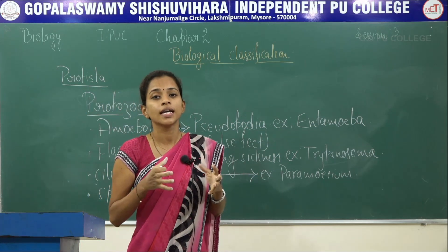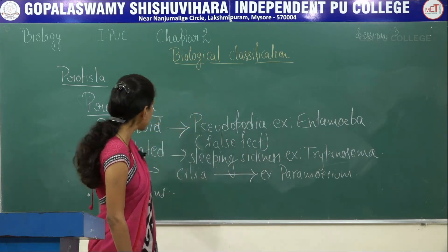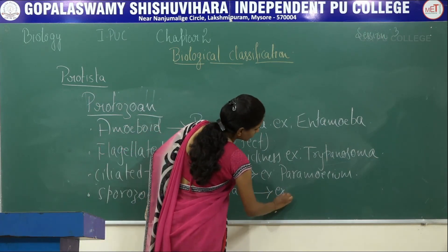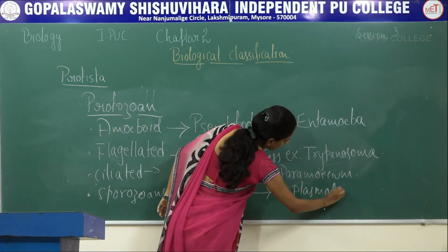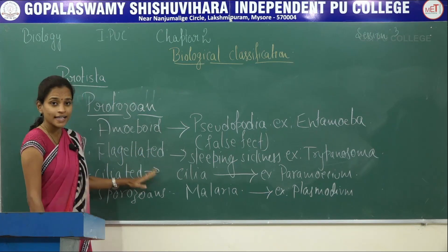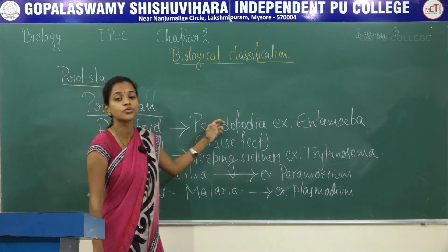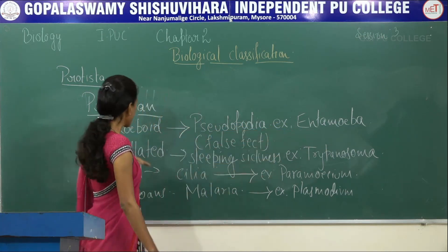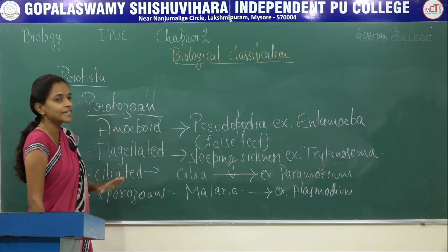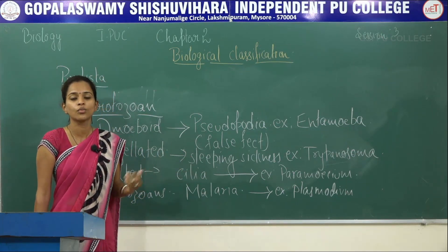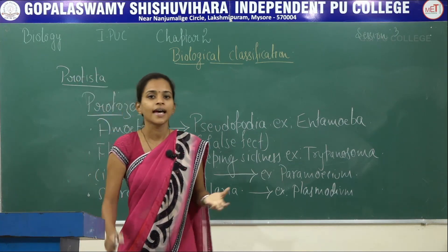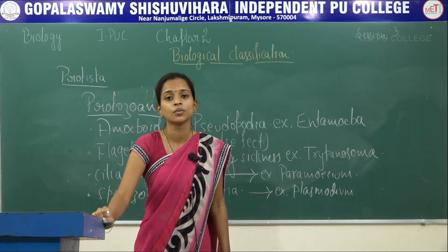The last type of protozoan is sporozoans — organisms which involve a spore-like stage in their life cycle. The disease associated is malaria. An example is Plasmodium. So the four different types of protozoans are: amoeboid (with pseudopodia, example Entamoeba), flagellated (with flagella, some causing sleeping sickness, example Trypanosoma), ciliated (with cilia, example Paramecium), and sporozoans (spore-like life cycle stage, example Plasmodium causing malaria).